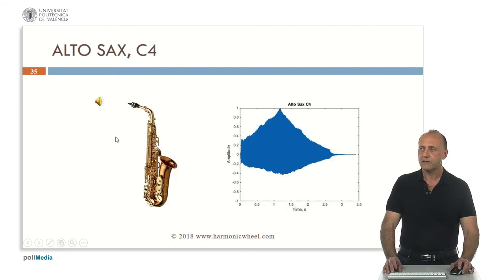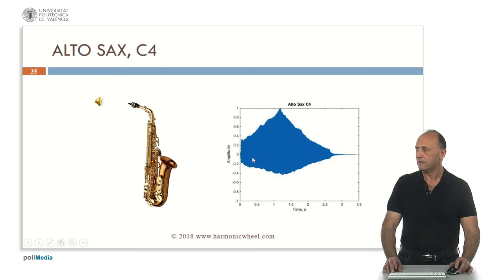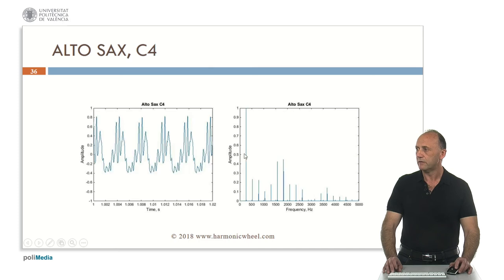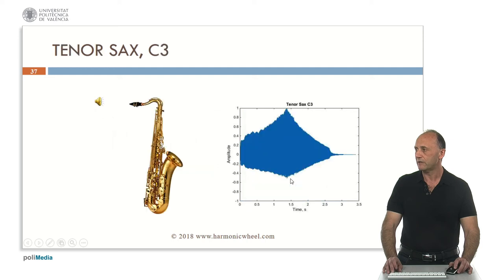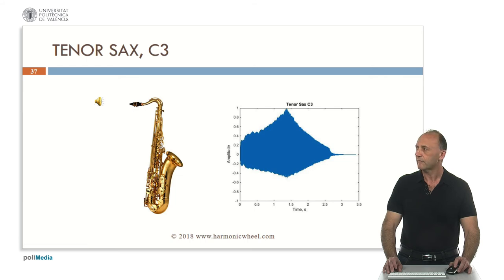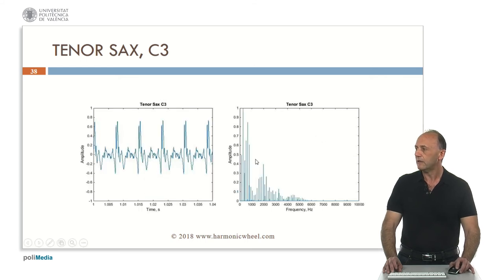Now the alto sax, C4 — the envelope, the waveform, and the spectrum. It contains many harmonics. The tenor sax, C3 — the envelope and then many harmonics in the spectrum.